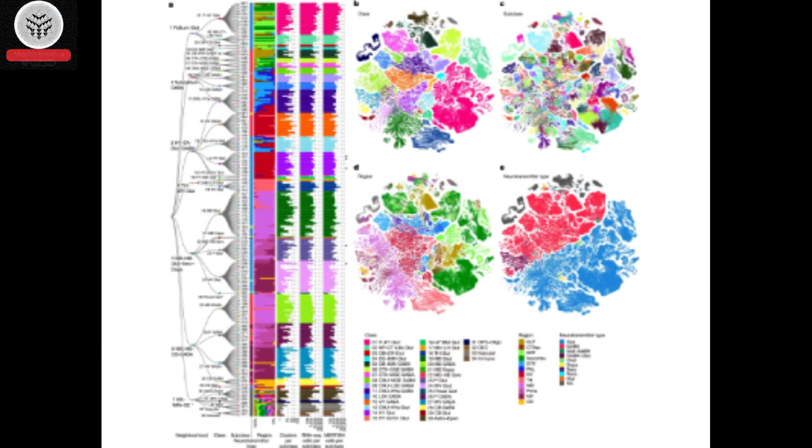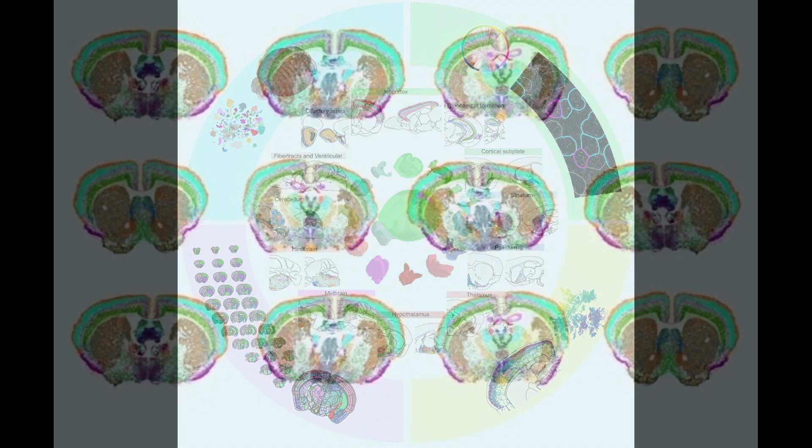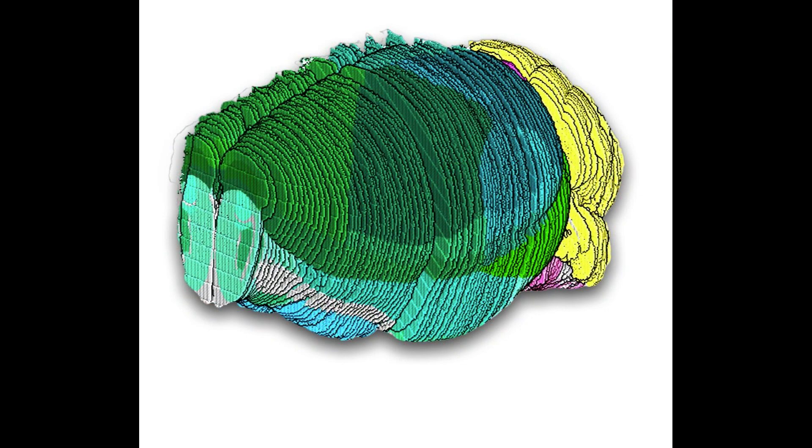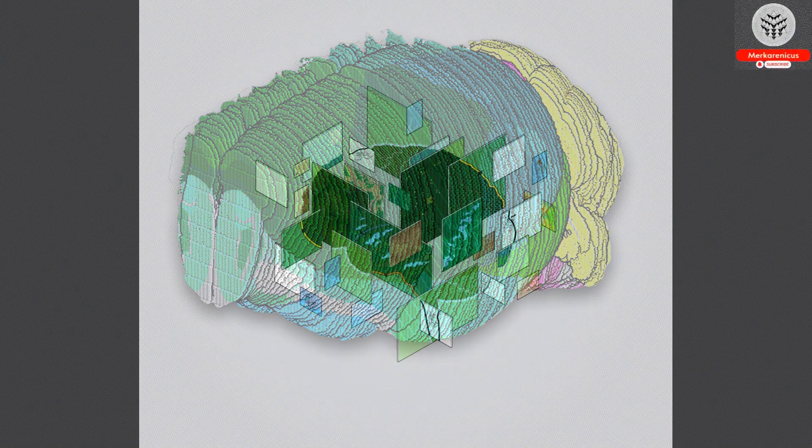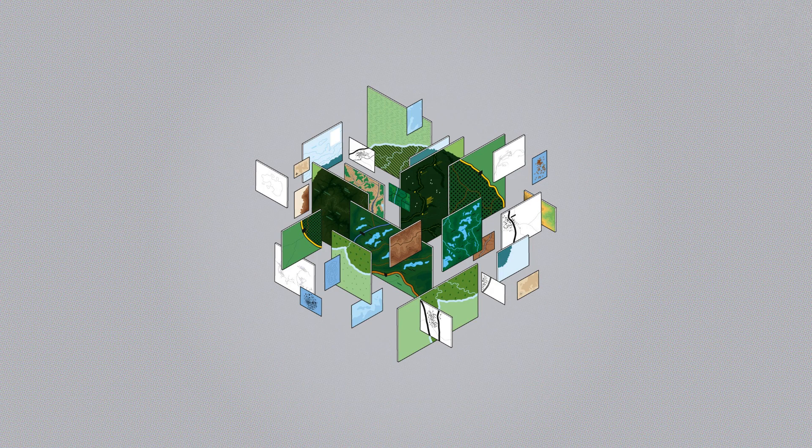In addition, the atlas provides a comprehensive representation of the cell epigenome, which encompasses the various chemical modifications to a cell's DNA and chromosomes that impact the expression of genetic information. It meticulously outlines thousands of distinct epigenomic cell types and millions of potential genetic regulatory elements specific to different types of brain cells.